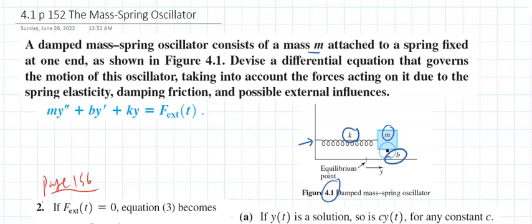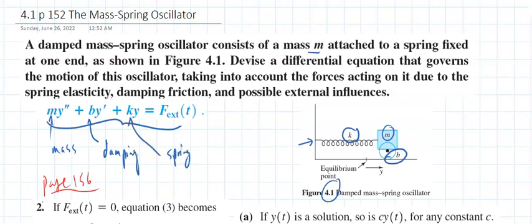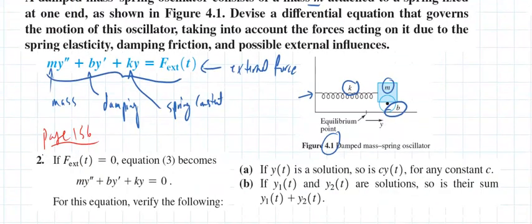This will be explained in more detail in section 4.9, where we're going to derive the whole thing. For now we're going to take the given equation, where M is the mass, B is the damping force, K is the spring constant, and F is the external force. Here we'll just take certain solutions and verify they work; in section 4.9 I'll work this out from scratch and derive the equation.